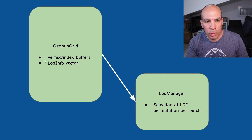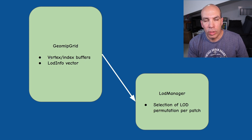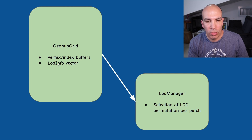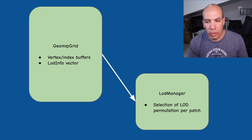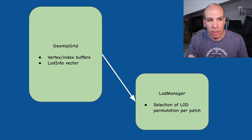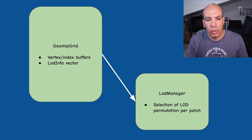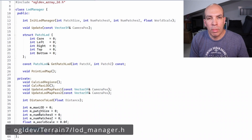In terms of the big picture of the classes, we have the GeoMipGrid class which maintains the vertex and index buffers for the actual grid of vertices on the GPU, as well as the vector of LOD info structures. The GeoMipGrid holds an instance of the LOD manager, which selects the correct permutation to be used when rendering. This permutation inside the LOD info vector tells you exactly the segment of indices inside the index buffer that you need to render for this patch, in the correct LOD for the core as well as the ring.